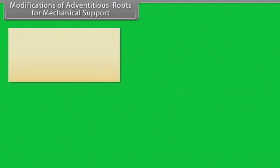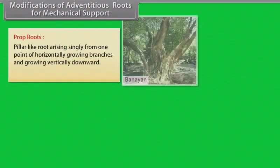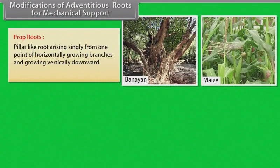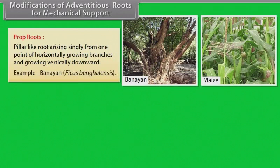Modifications of adventitious roots for mechanical support. Prop roots: Pillar-like roots arising singly from one point of horizontally growing branches and growing vertically downward. Example: banyan.